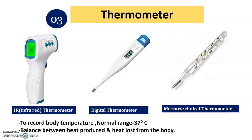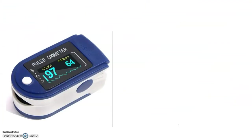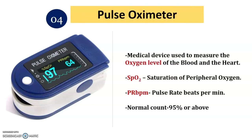The next spot is the pulse oximeter. The pulse oximeter is used to check the oxygen level in the blood and the heart rate. It is denoted by SpO2, which means saturation of peripheral oxygen in the blood. The pulse rate is measured in beats per minute. The normal SpO2 range is 95% or above. Below 95% may indicate critical conditions affecting oxygen supply.